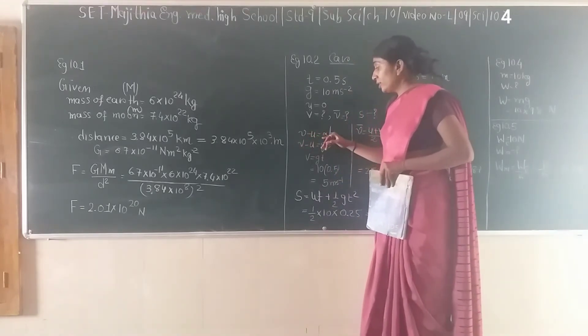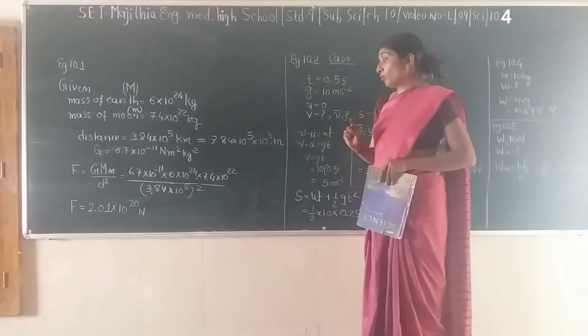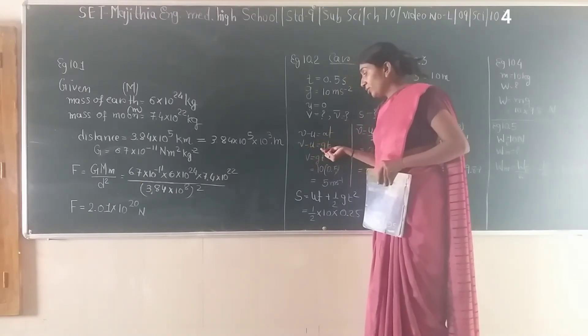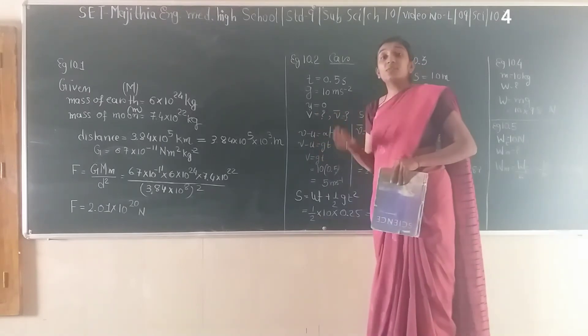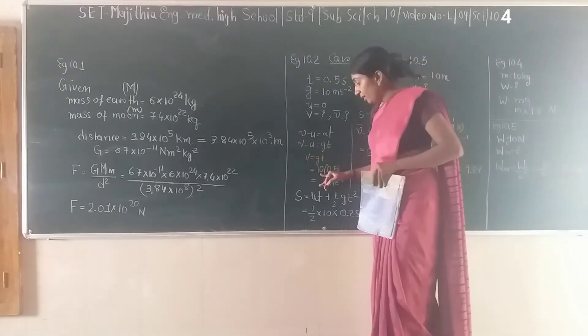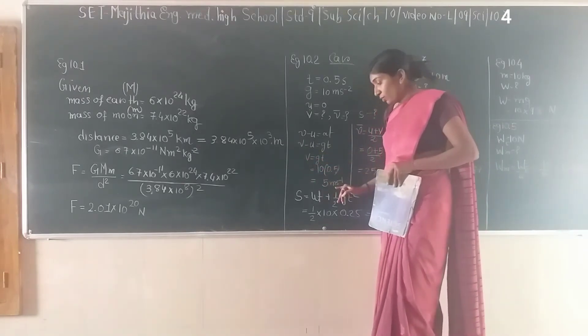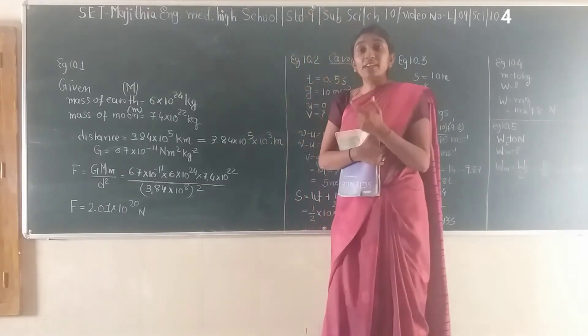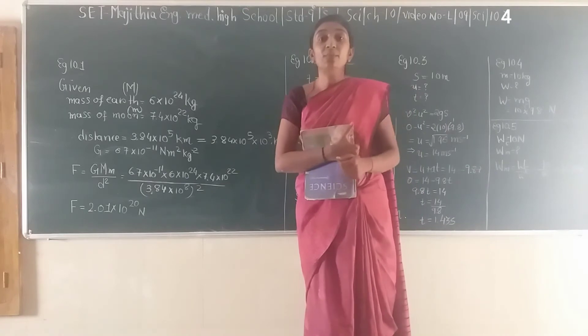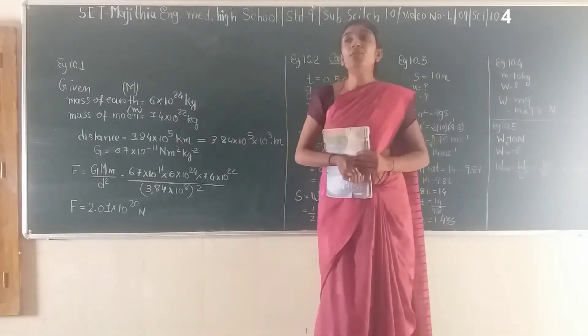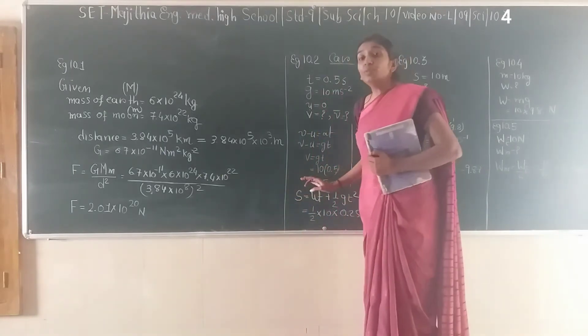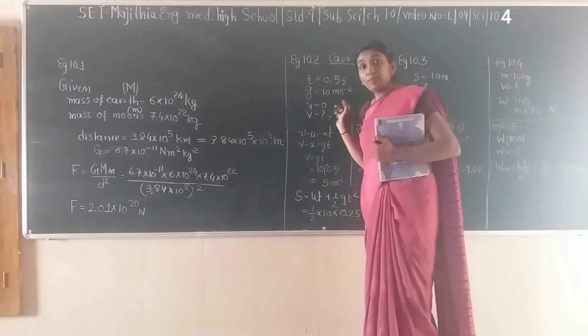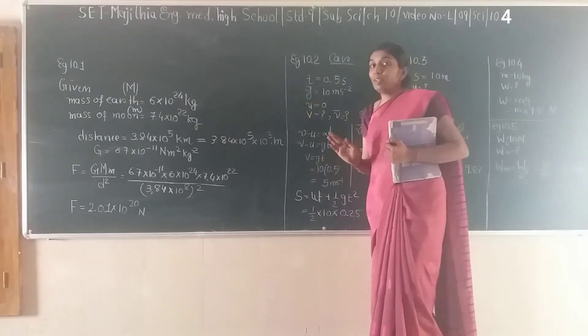Using v - u = at, Newton's first equation of motion, we replace acceleration a by gravitational acceleration g. So v - u = gt. Since u = 0 for a freely falling body, v = g × t. Substituting values, we get v = 5 m/s. Now, you might ask why we're taking g = 10 instead of 9.8. It's calculated as 9.8, but for simplification, sometimes g = 10 is given. If the question states g = 10 m/s², we'll use 10; otherwise, we use 9.8 m/s².